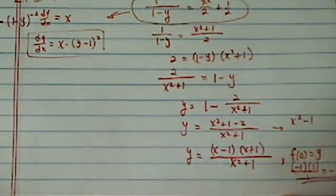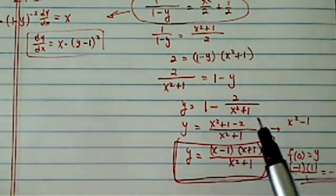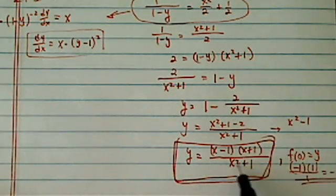So in the end, the answer for this one is y is equal to x minus 1 times x plus 1, everything over x squared plus 1. So, this is how we handle solving this differential equation. Hope it's clear. Please be sure to comment on YouTube, and let me know if it helped you.